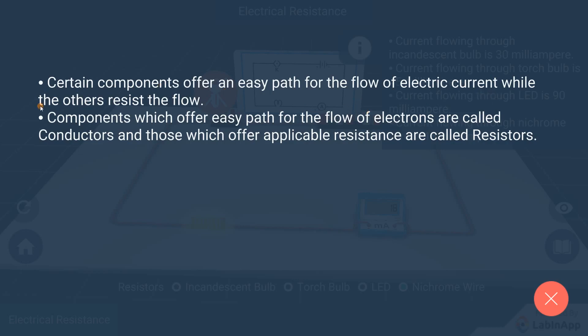Components which offer an easy path for the flow of electrons are called conductors, and those which offer appreciable resistance are called resistors.